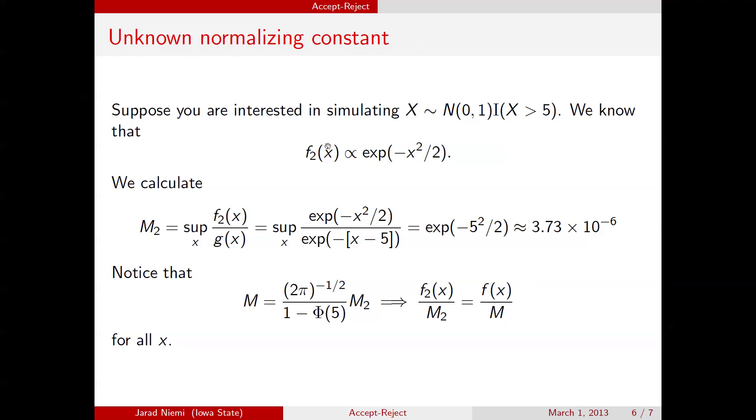And that's the only quantity that shows up in the acceptance probability, and therefore we don't actually need to know the normalizing constant in order to use this methodology. And the only caveat here is that now m sub 2 has no relationship to the acceptance probability. Only m did when you actually used the normalized density.